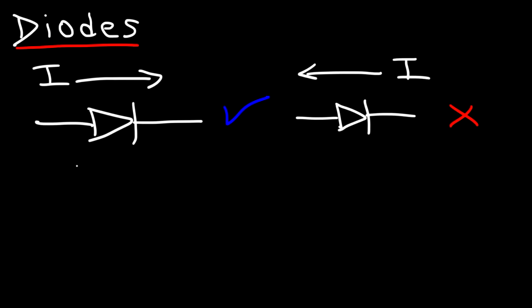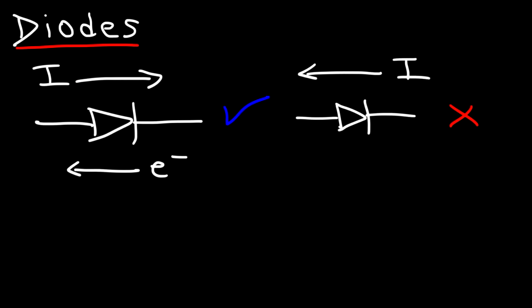For practical purposes, a diode conducts electricity in one direction. Keep in mind this is opposite to the electron flow. Conventional current describes the flow of positive charge, but electron flow goes opposite to the direction of conventional current. So the electrons are flowing in the opposite direction — just keep that in mind.